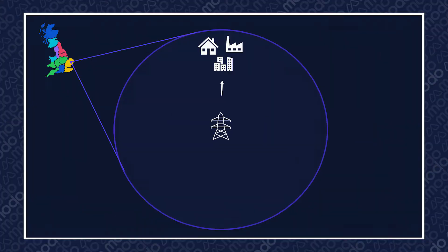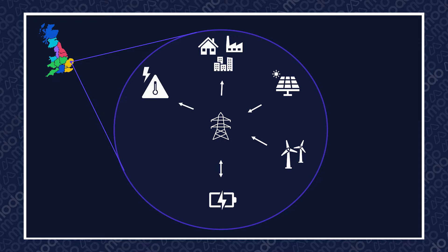Welcome to today's Energy Academy episode on local flexibility. With more distributed generation on the UK grid — like solar farms, onshore wind turbines, batteries and the like — as well as growth in electricity demand as the UK electrifies heating and transport in the move towards net zero, our electricity networks must adapt.